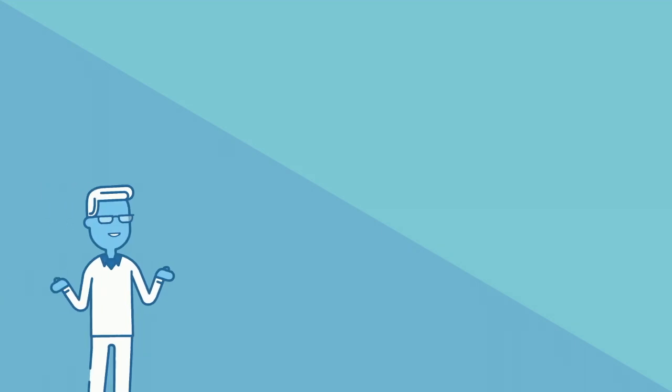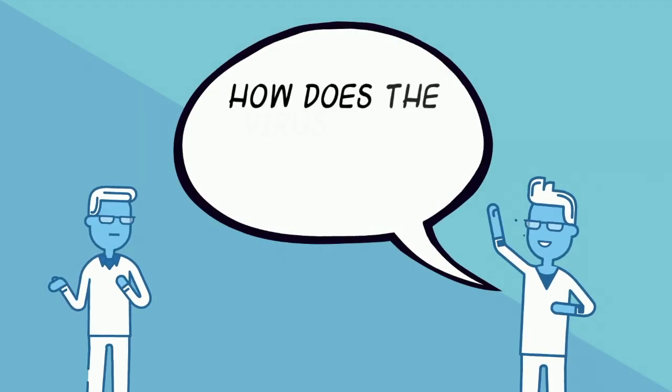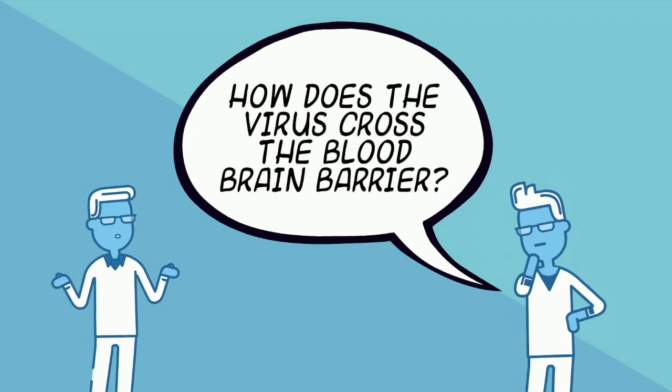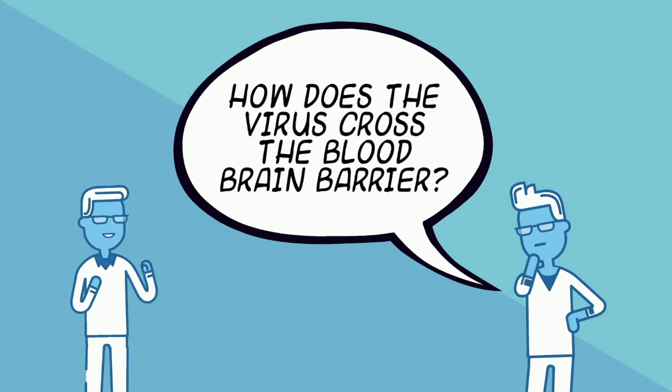Although this mechanism of viral infection is understood, what remains largely unknown is the exact mechanism of how the virus crosses the blood-brain barrier to enter the central nervous system. However, a few mechanisms have been hypothesized for this.